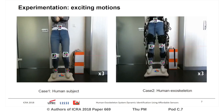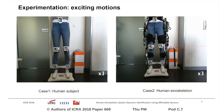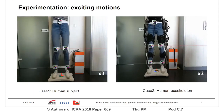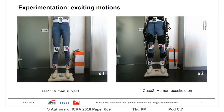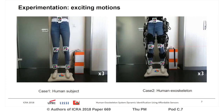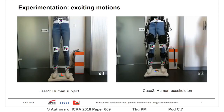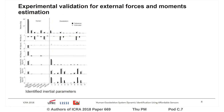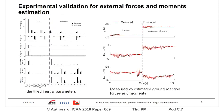Exciting identification motions were performed during the experimentation by the subject alone as a first step and then by the subject wearing the exoskeleton. Based on the identified parameters, the ground reaction force and moments were estimated and compared to the measured ones via the balance board, with a normalized root-mean-square difference lower than 6%.